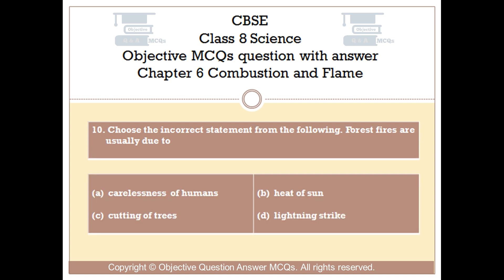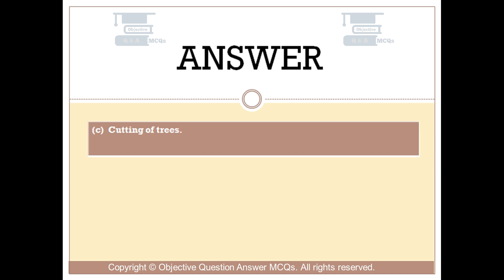Question number 10: Choose the incorrect statement from the following. Forest fires are usually due to — Option A: carelessness of humans. Option B: heat of sun. Option C: cutting of trees. Option D: lightning strike. The right answer is Option C: cutting of trees.